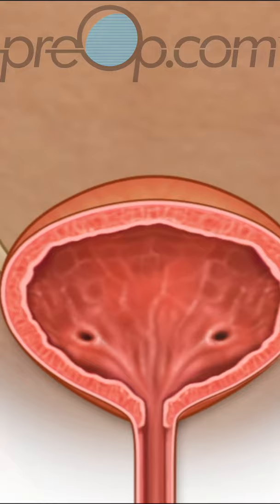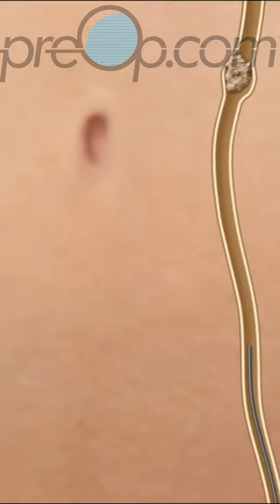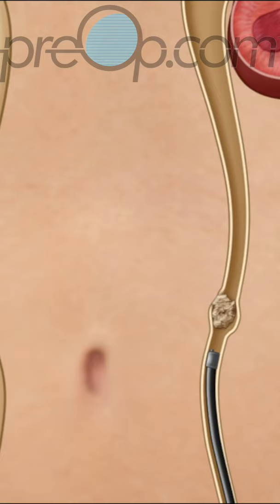To proceed to a ureteroscopy, a guide wire is threaded through the cystoscope into the ureter. A ureteroscope is guided by the wire in the ureter to the stone.